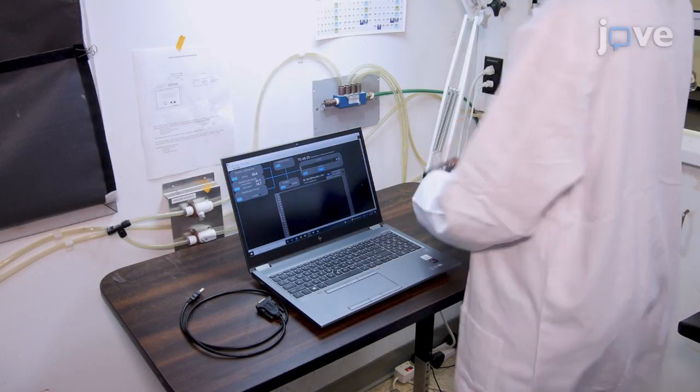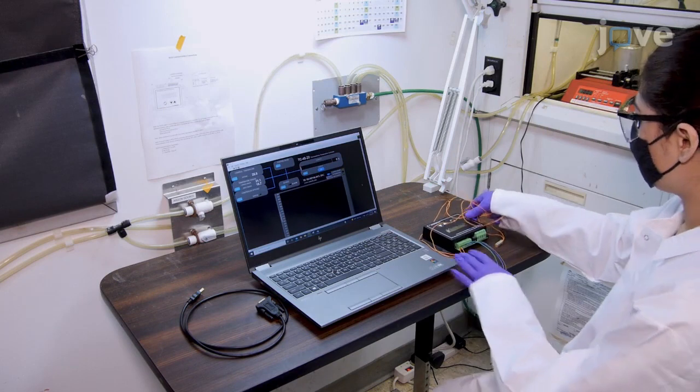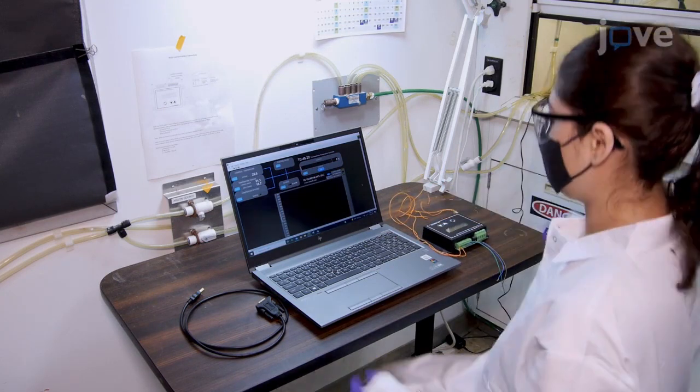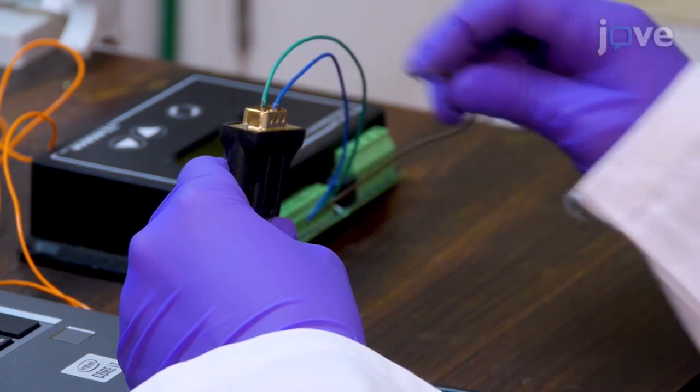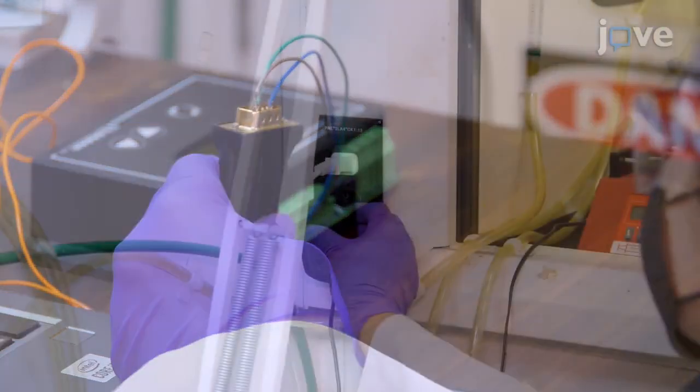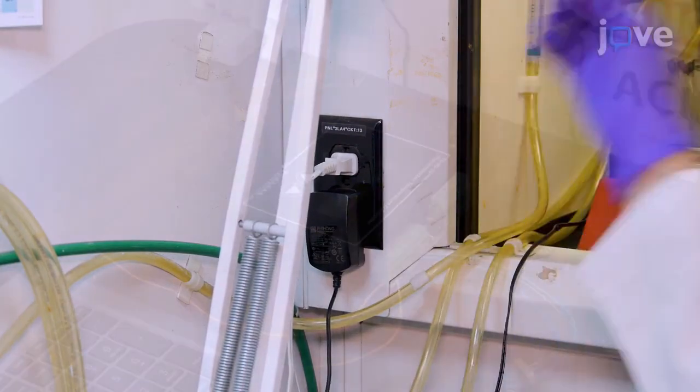Begin by placing the thermostore in a stable position on a side bench as close to the fume hood as possible. Insert the USB side of an RS-232 adapter cable into the computer USB port and plug the cord into a power socket.